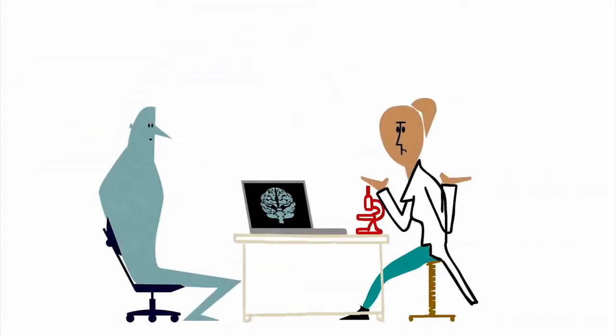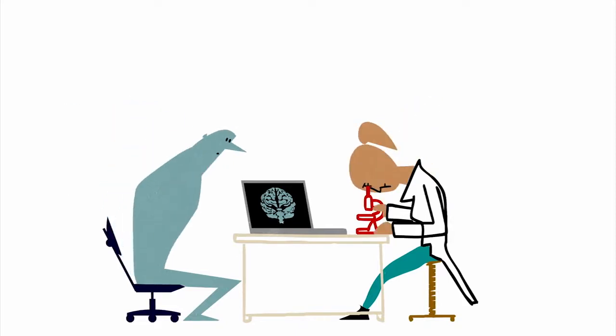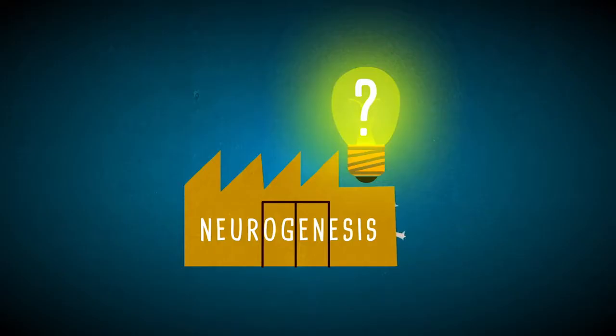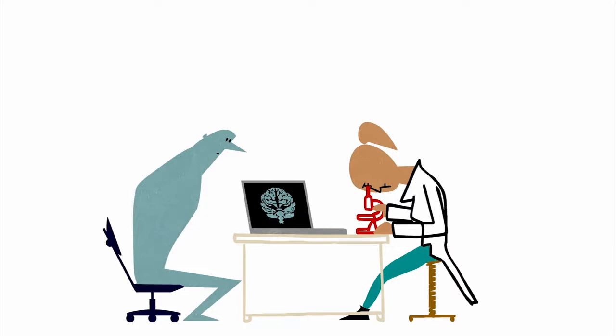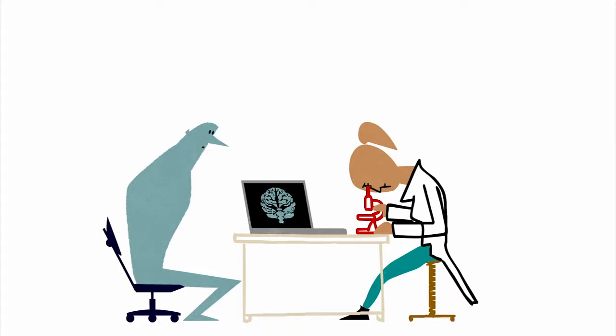Scientists don't yet have a good grasp on exactly what role neurogenesis plays in any of these regions or why they have this ability that's absent from the rest of the brain. But the mere presence of a mechanism to grow new neurons in the adult brain opens up an amazing possibility.